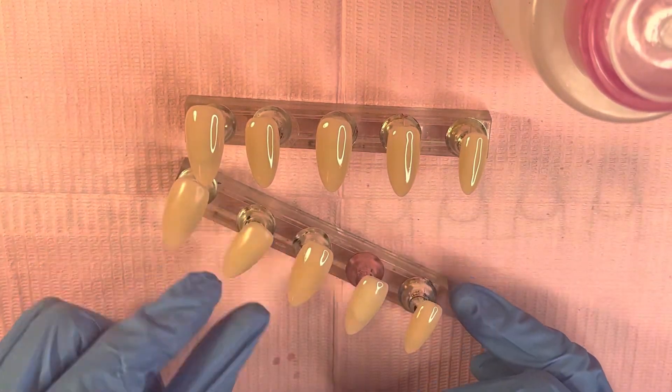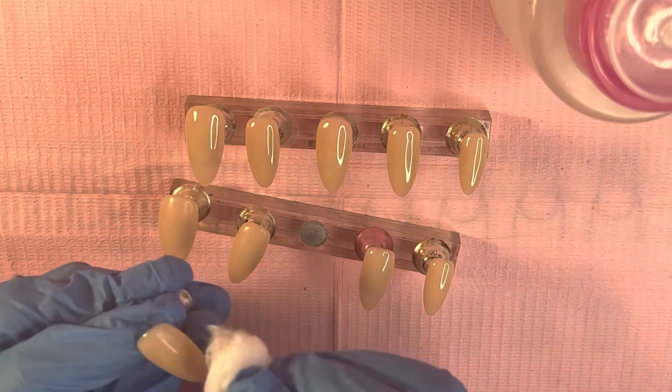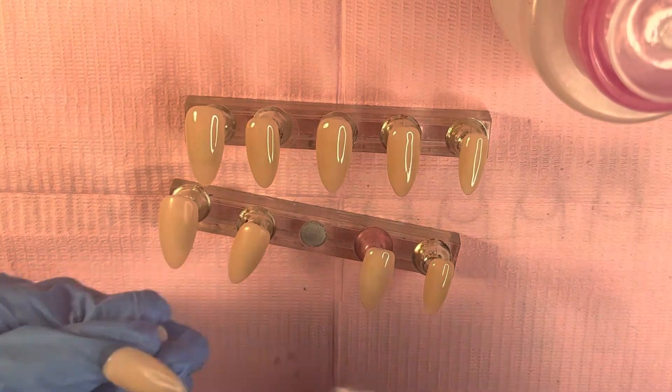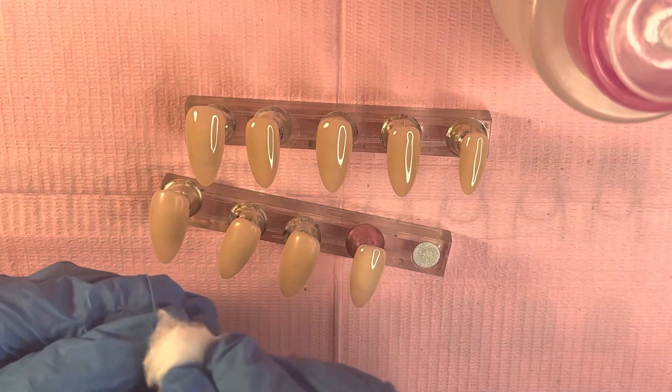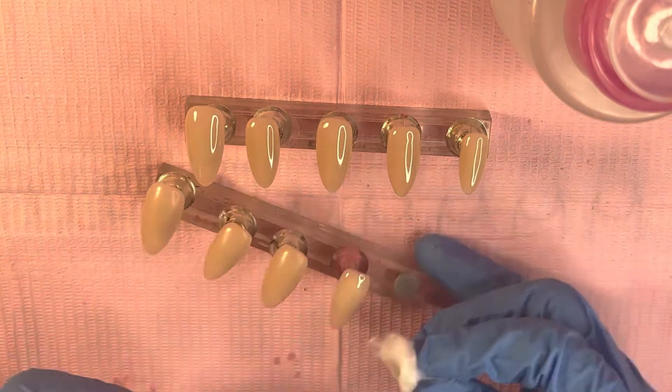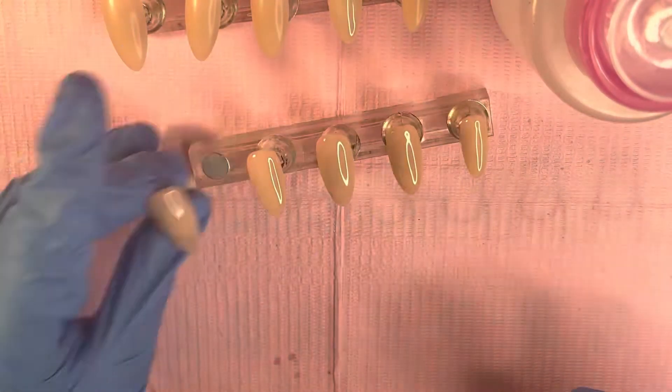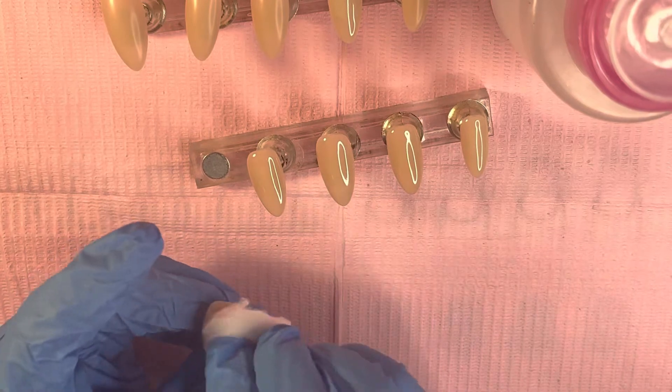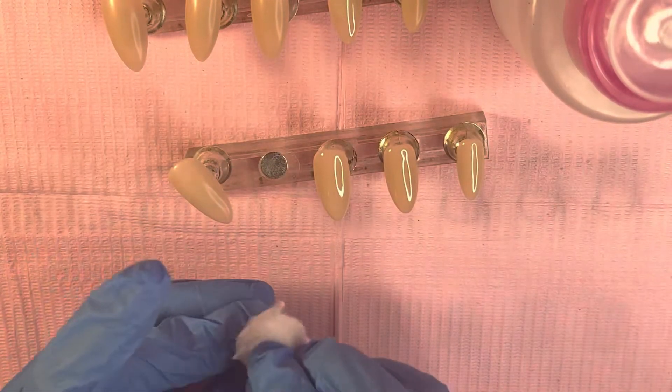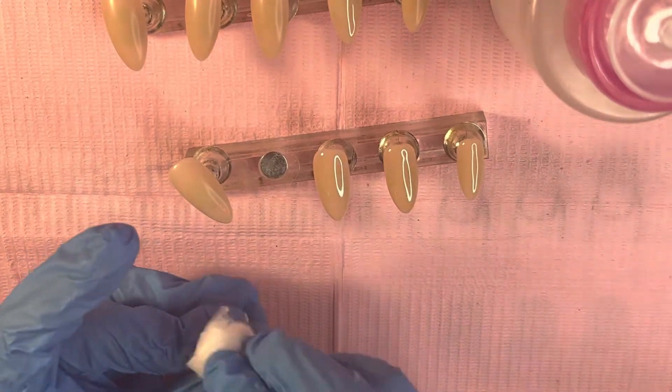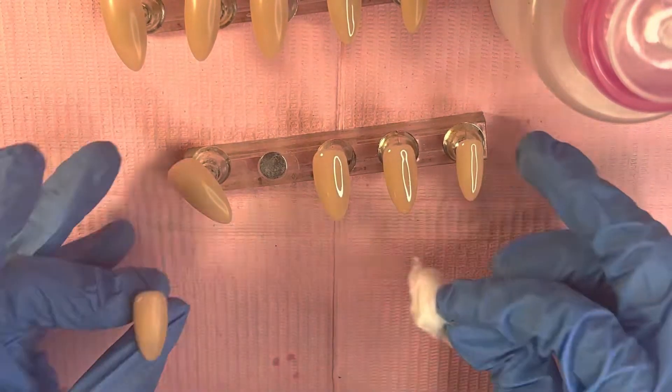So right now I'm just wiping off the sticky layer from the builder gel. We did all three coats and I skipped the ring finger because I wanted that one to stay sticky because of the design that I'm going to be doing on that one. So I didn't want to wipe it completely clean. I wiped the other ones clean and I took the sticky layer off to be able to work on those.